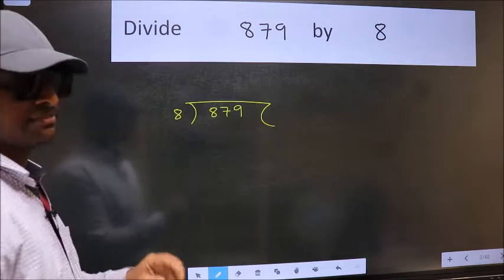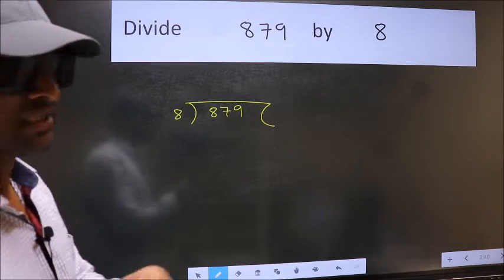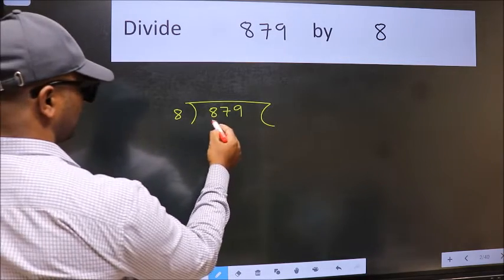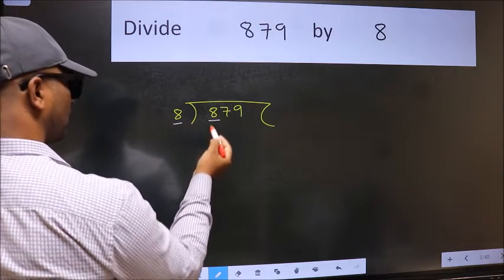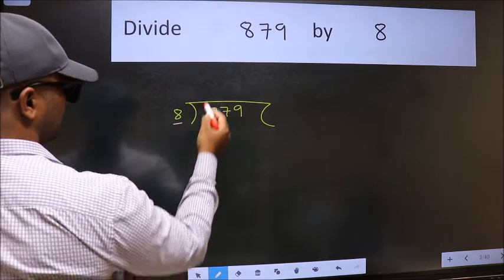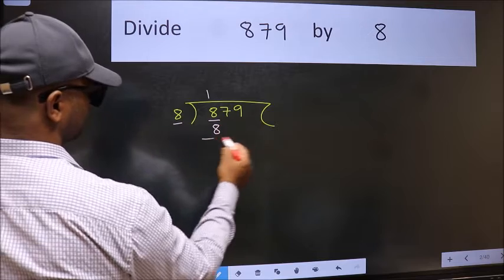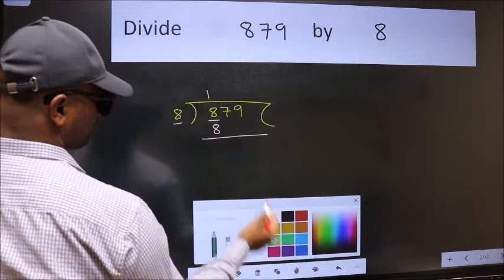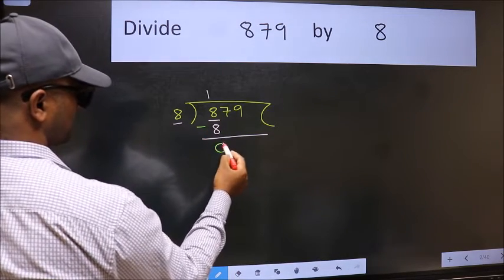This is your step 1. Next, here we have 8 and here 8. When do we get 8 in 8 table? 8 once 8. Now we should subtract. We get 0.